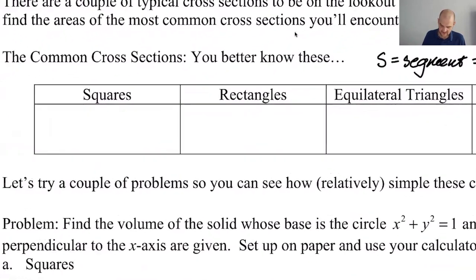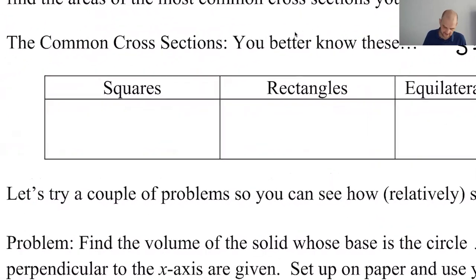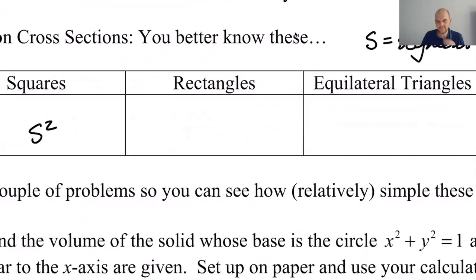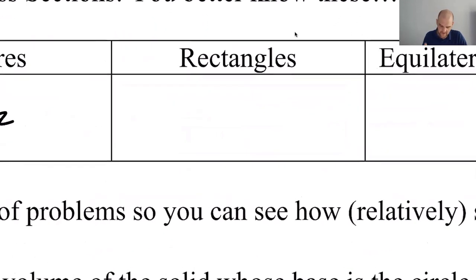Area of a square in terms of S is just going to be S squared. Now rectangles are maybe actually the weirdest one. You have to be told something. So you're going to be told that it's like, you know, the height is three times the base and the base is in the xy plane. So the base is S and then the height is three times S. So you have to be told something.